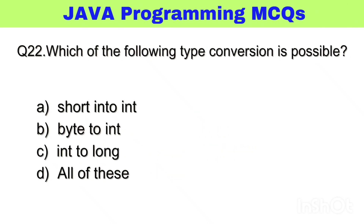Question number 22. Which of the following type conversions is possible? The right answer, option D: all of these.